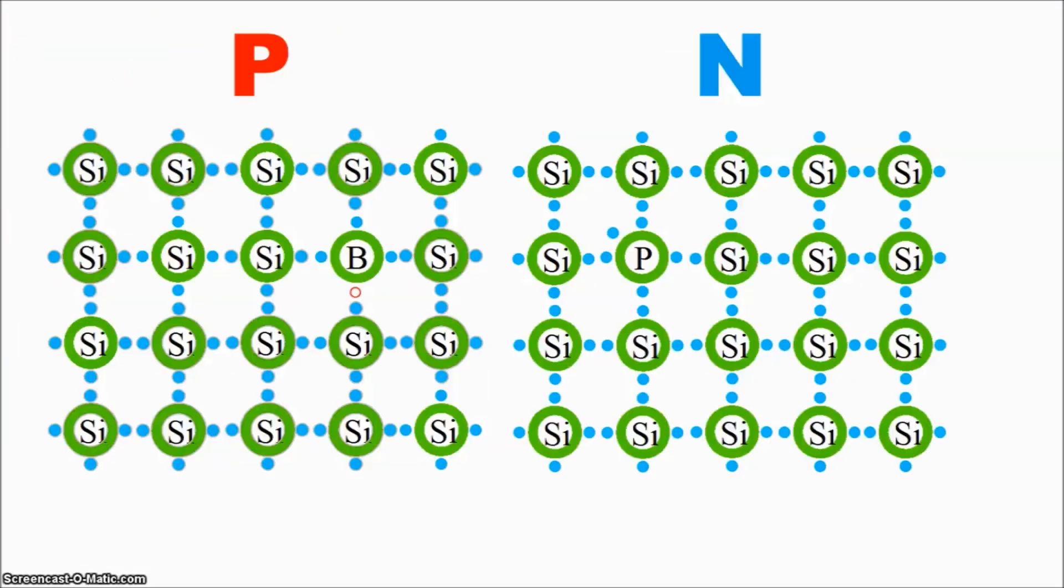Silicon crystals with extra holes are called p-type silicon, p for positive, and silicon crystals with extra electrons are called n-type, n for negative.